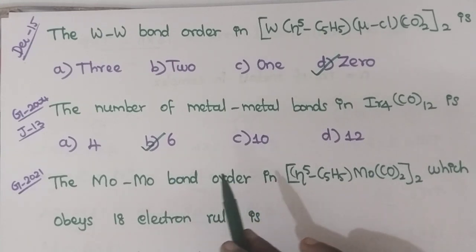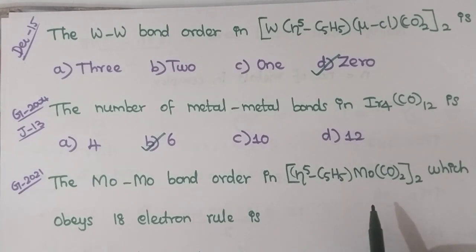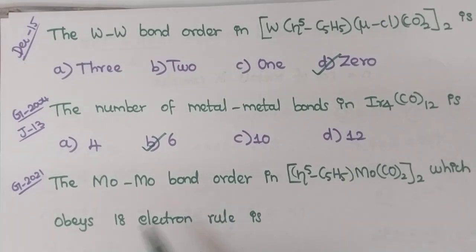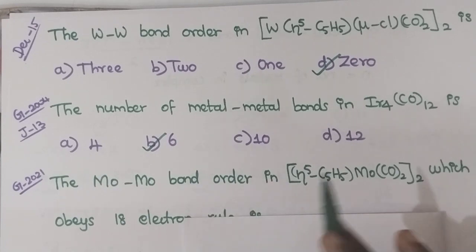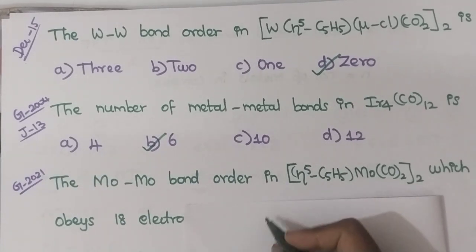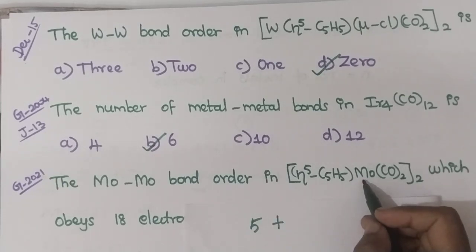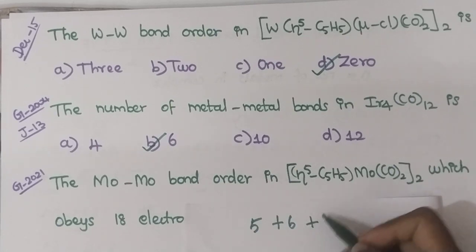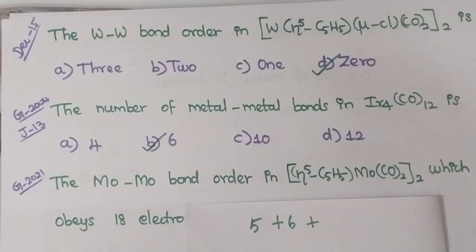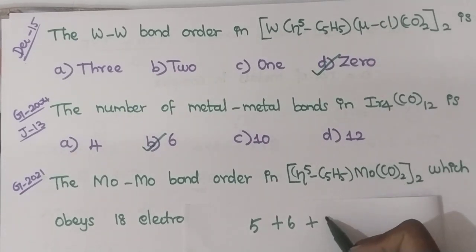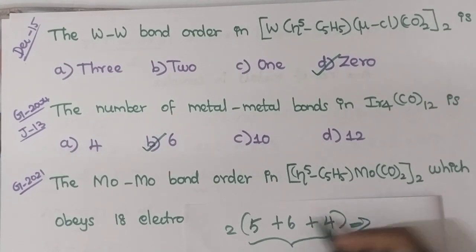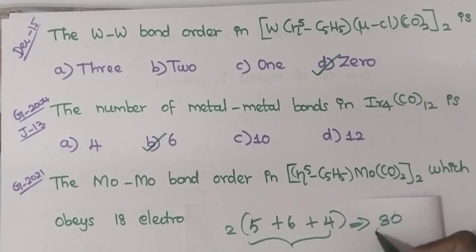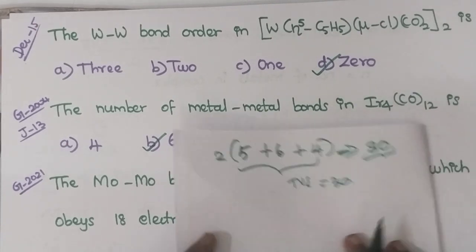Now, find the Mo–Mo bond order in [η⁵-C₅H₅-Mo(CO)₂]₂, which obeys the 18-electron rule. η⁵-C₅H₅ donates 5 electrons. Molybdenum — in the sequence titanium, zirconium, niobium, molybdenum — has a valence electron of 6. Two carbonyls donate 4 electrons. So per unit: 5 + 6 + 4 = 15. Since it is given as twice: 15 × 2 = 30. Total valence electron = 30.